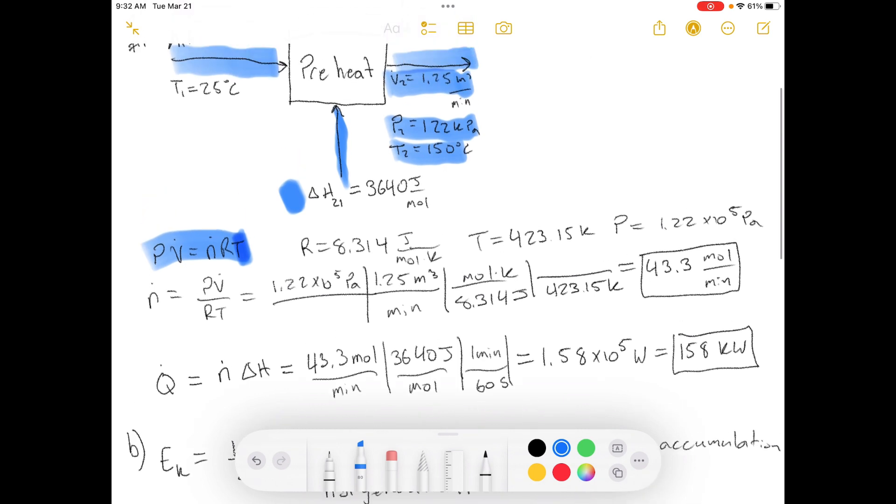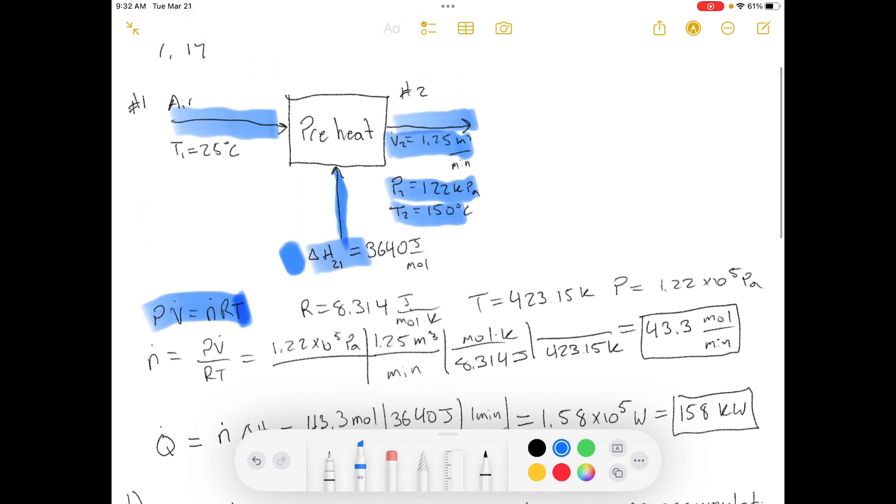So for this first part, we need to know if we're going to use this enthalpy change, we have to know a mass flow rate. That's why moles is here at the bottom. So we need to calculate the molar flow rate, and we're going to get that by using the ideal gas equation of state. The number of moles is equal to PV over RT. And we need to convert T into Kelvin and make sure that the pressure is in Pascals so that the units all cancel out.